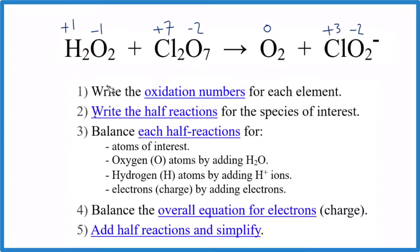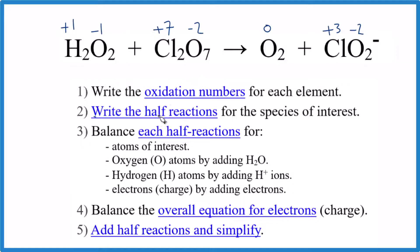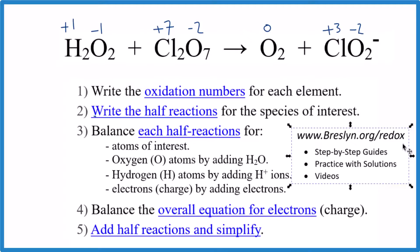We're going to write and balance the redox reaction for H₂O₂ plus Cl₂O₇. We'll do it first in acidic medium, then add one step at the end to get to basic medium. You need to be able to write the oxidation numbers — I've already written them in here. If you need help with any of these steps, you can jump over to my website breslin.org/redox for practice and guides.